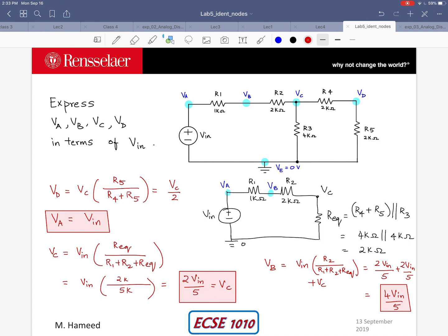The only thing that is remaining is for me to write VD in terms of Vin. I've already found VD relationship with VC which is VC divided by 2. I know VC is 2Vin divided by 5. So if I use that over here I just get Vin divided by 5 for VD. So those are my 4 node voltages in terms of the input Vin.